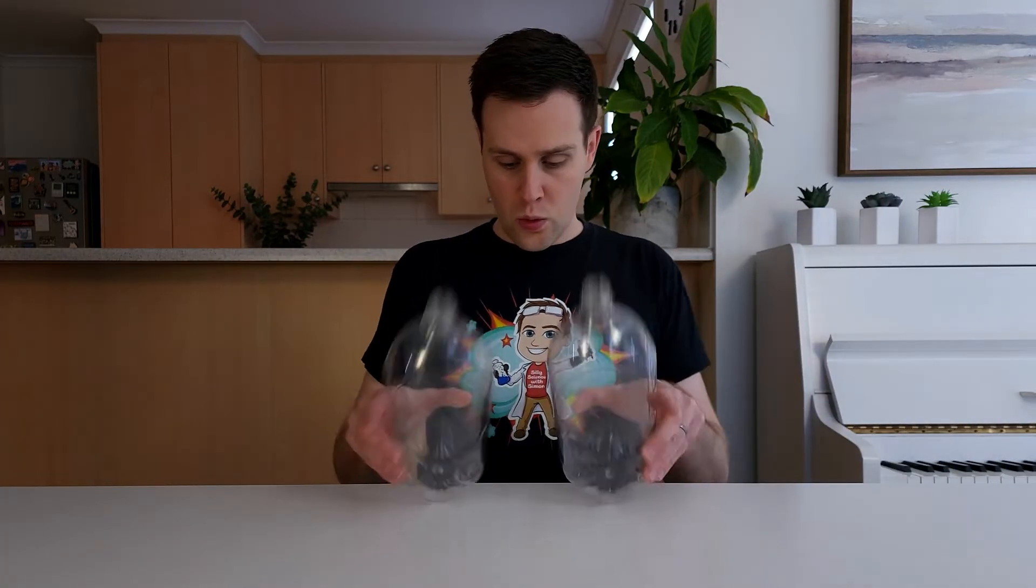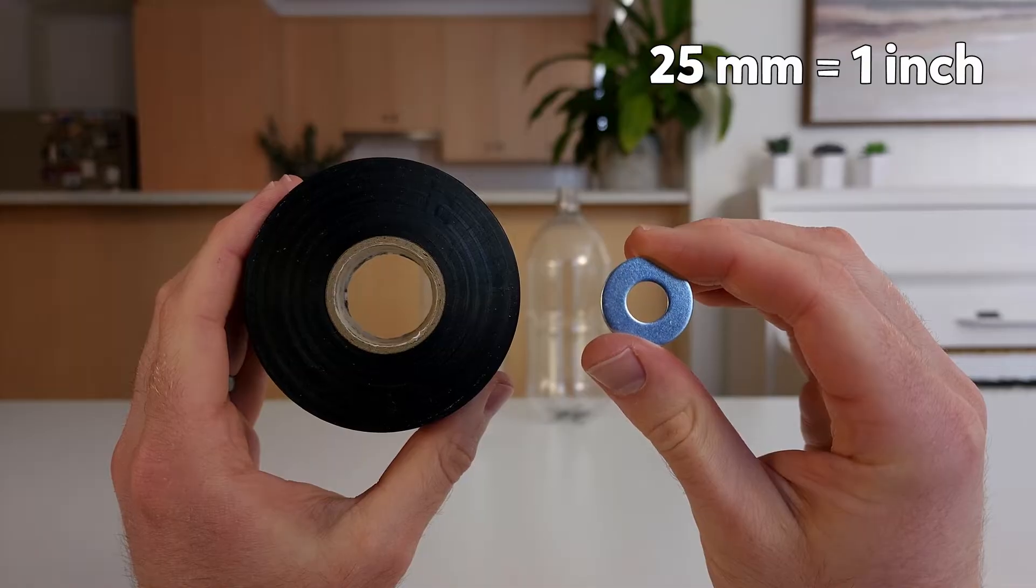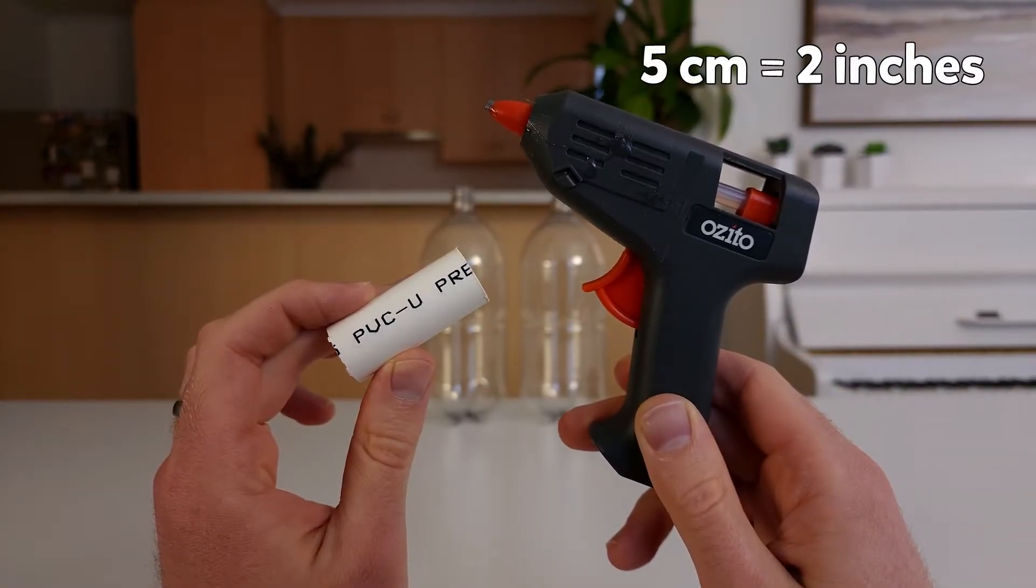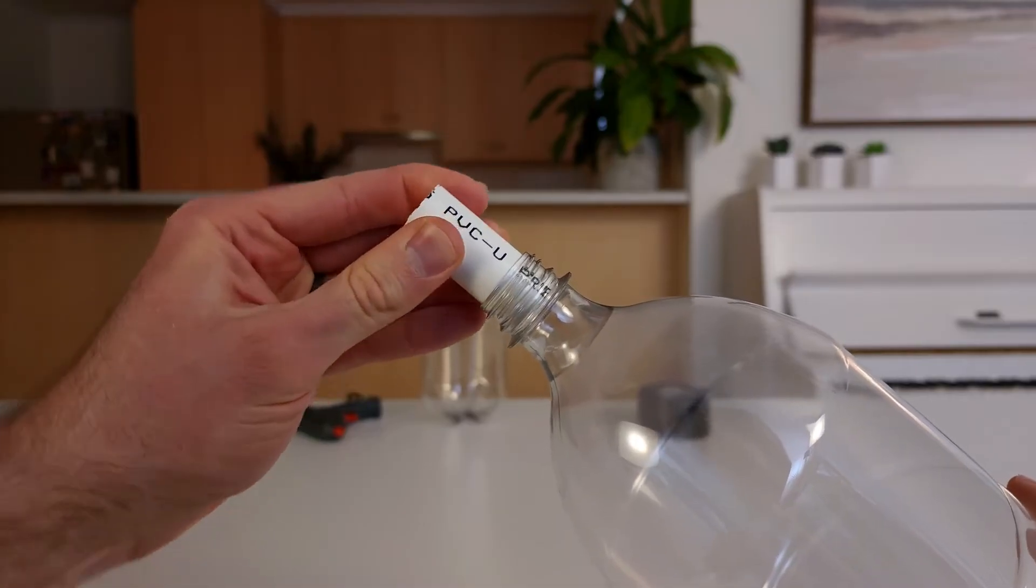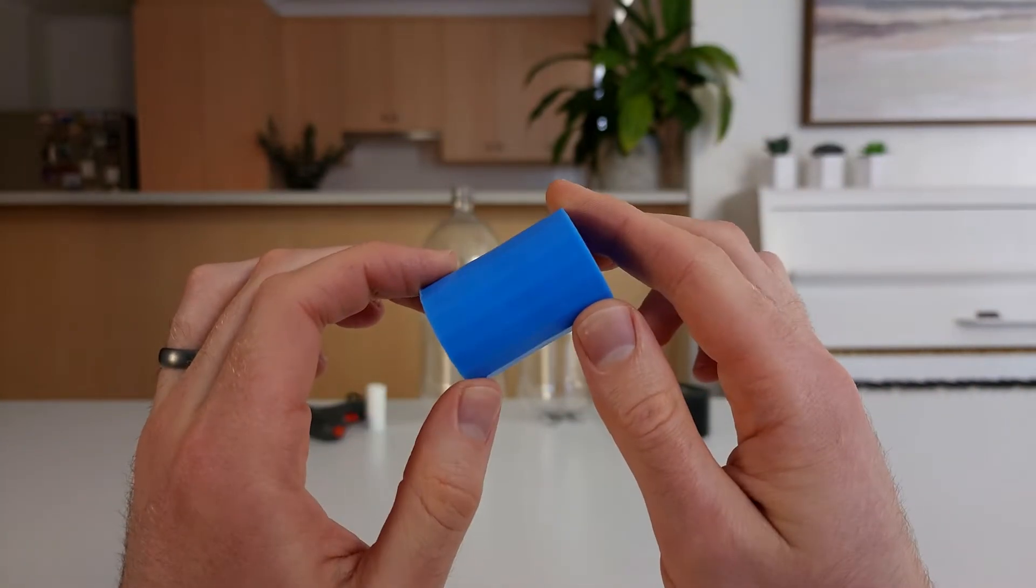To make a tornado in a bottle you'll need two clear 2-liter bottles and something to connect them together. Either duct tape and a 25mm washer, a hot glue gun and a 5cm long piece of PVC pipe thin enough to fit inside the bottle, or a purpose-built bottle connector. I've placed a link for this one in the description.